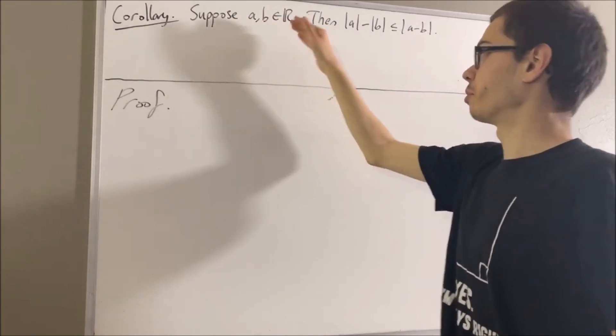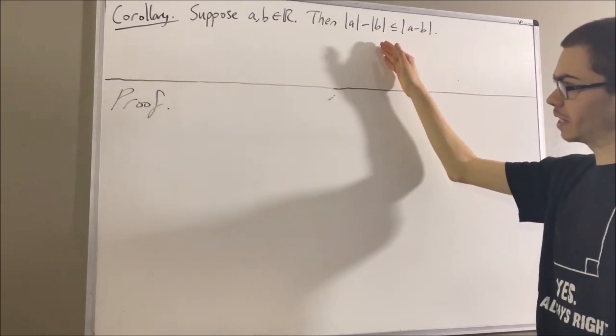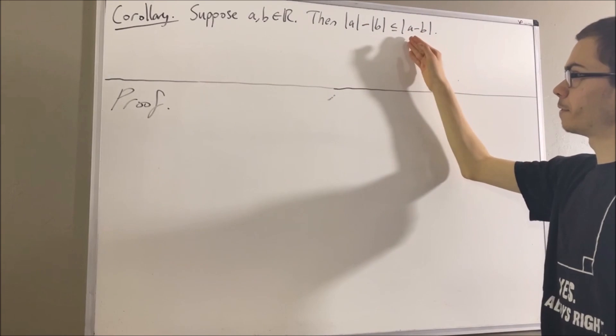Suppose A and B are real numbers. Then the absolute value of A minus the absolute value of B is less than or equal to the absolute value of A minus B.